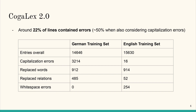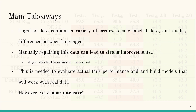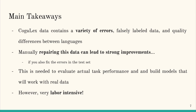Our COGALAX 2.0 dataset aims to fix these issues. We specifically tackled the worst performing German and English parts of the dataset. We then tested the dataset with various neural models and data configurations, and showed that fixing the whole dataset provided a clear gain in all tested models. For our two main models based on XLM-RoBERTa, a small but consistent boost in the unmodified Chinese language could also be observed. The original COGALAX data contains a variety of errors like falsely labeled data, unnatural patterns, and quality differences between languages.